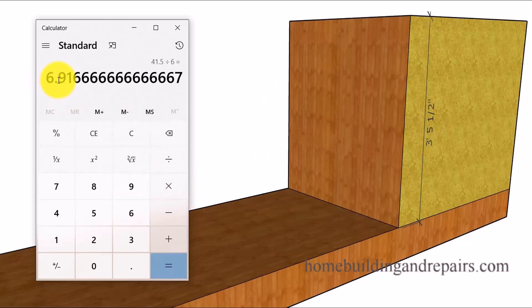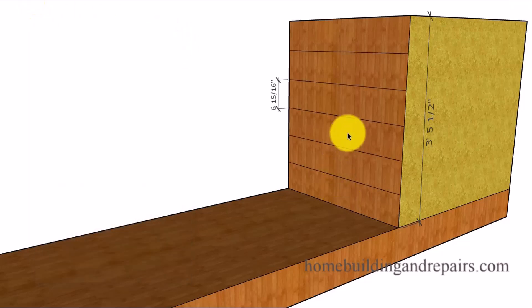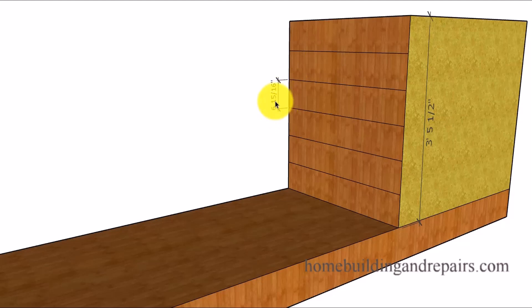That brings us to 6.916 — just a little over a sixteenth of an inch less than seven inches. Hopefully not that difficult. As you can see here, we have six units at six and fifteen-sixteenths of an inch, or six individual risers.